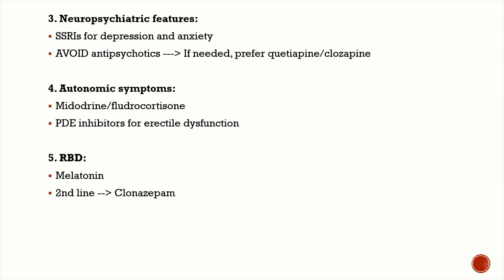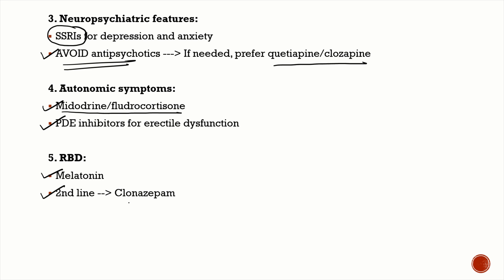For neuropsychiatric features: for depression and anxiety use SSRIs, and remember acetylcholinesterase inhibitors also help with neuropsychiatric features. Avoid antipsychotics as much as possible due to neuroleptic sensitivity, but if necessary, prefer quetiapine or clozapine. For autonomic symptoms use midodrine or fludrocortisone for postural hypotension, and phosphodiesterase inhibitors for erectile dysfunction. For REM sleep behavioral disorders, use melatonin; second-line is clonazepam.